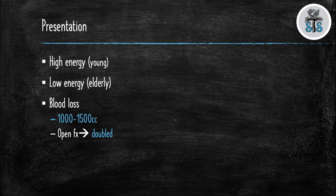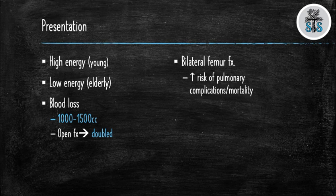Femoral shaft fractures can lose a large amount of blood. If the fracture is closed, they can lose between 1,000 to 1,500 milliliters of blood. If the fracture is open, that number is doubled to 2,000 to 3,000 milliliters. If the patient has sustained bilateral femoral shaft fractures, studies have shown they are at higher risk of pulmonary complications and mortality.